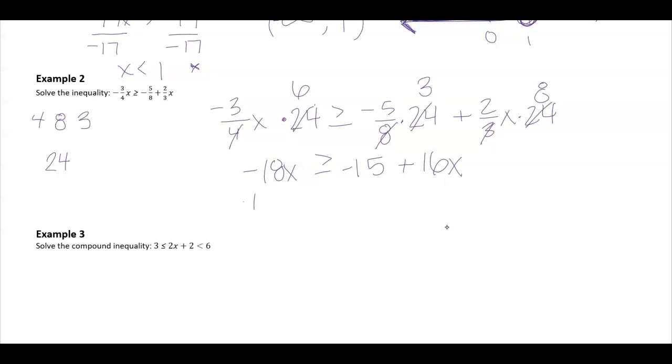I'm then going to subtract 16x on both sides, again solving this just as if it was an equation. And I get negative 34x is greater than or equal to negative 15. When I divide by negative 34 on both sides, I do have to switch my inequality sign, and I get 15 over 34.